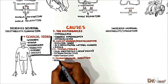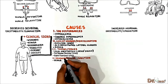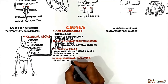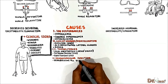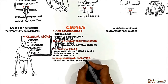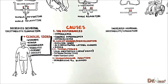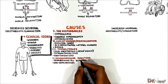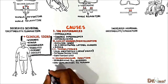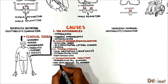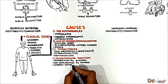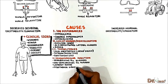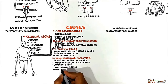The causes of decreased excitability at the neuromuscular junction include depolarizing muscular nicotinic receptor blockers, non-depolarizing muscular nicotinic receptor blockers, and diseases like Lambert-Eaton syndrome, myasthenia gravis, and botulinum toxin.